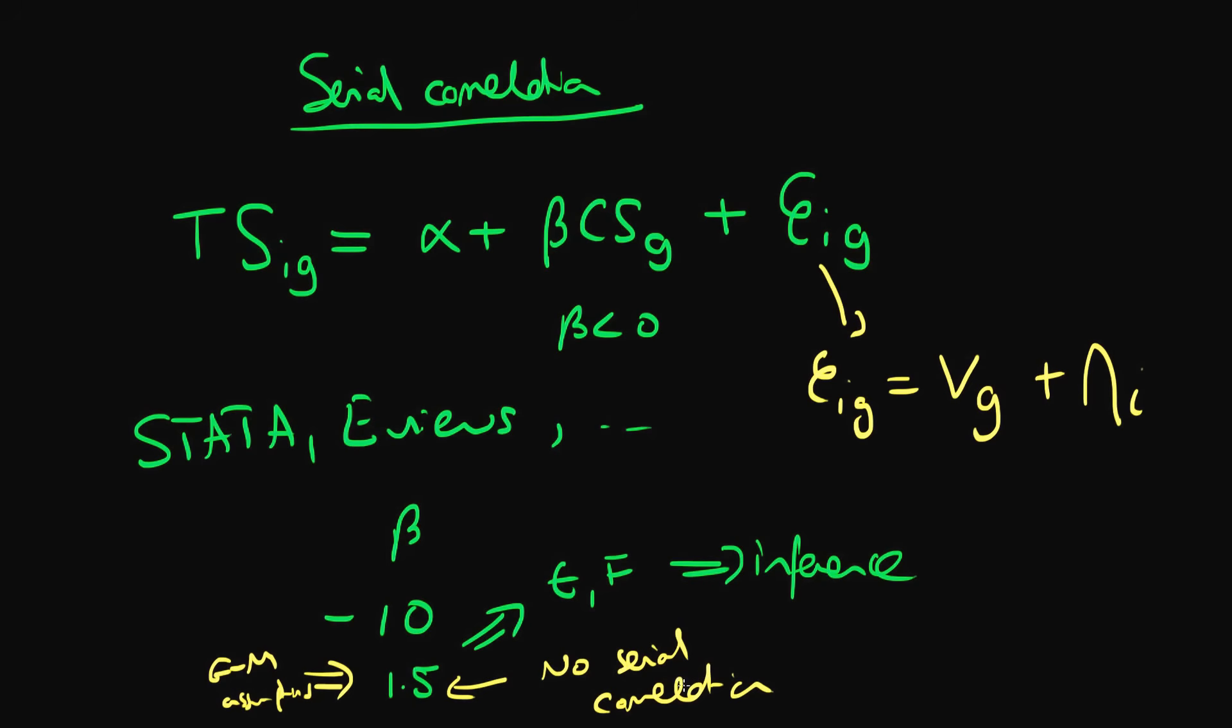We've spoken in the previous video about how this assumption of no serial correlation is likely going to be untrue in the case of grouping or clustering in errors. In reality, when I have this group structure of errors, my true standard error in beta is likely to be significantly more than the error which is outputted.